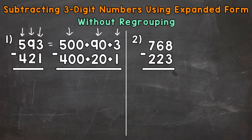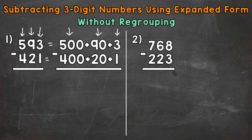As far as 421: 421 equals — the four is in the hundreds place, so it has a value of 400. The two is in the tens place, so it has a value of 20. And then the one is in the ones place and has a value of one.